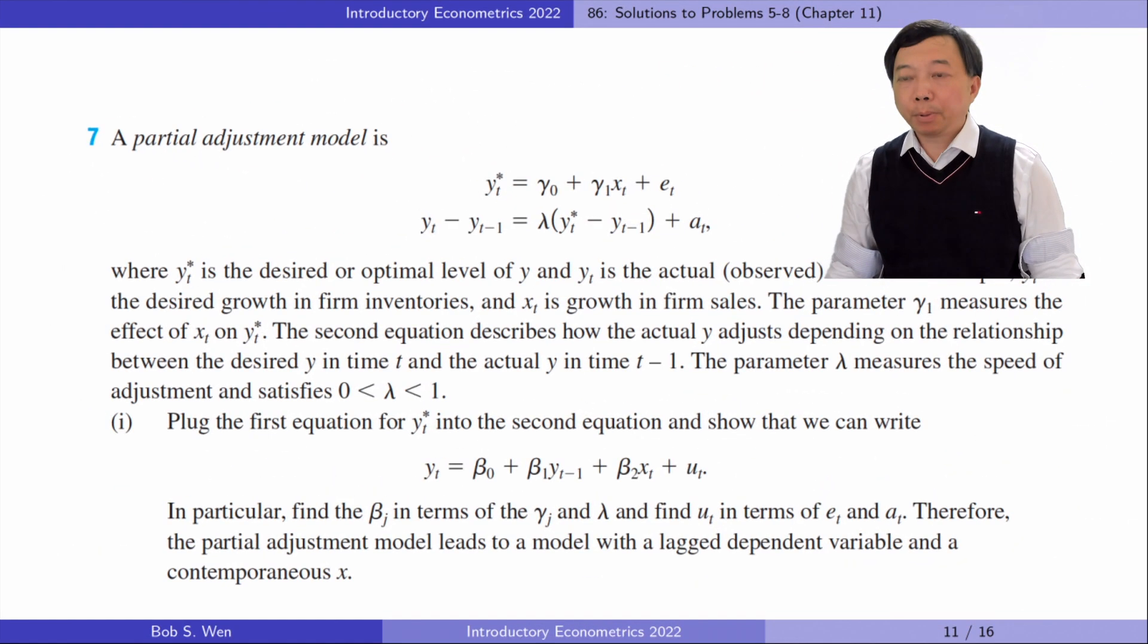Let's solve problem 7. A partial adjustment model is as follows, where y_t^* is the desired or optimal level of y and y_t is the actual observed level. For example, y_t^* is the desired growth in firm inventory and x_t is growth in firm sales.